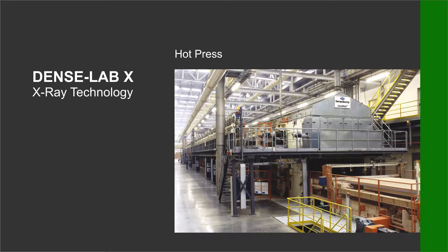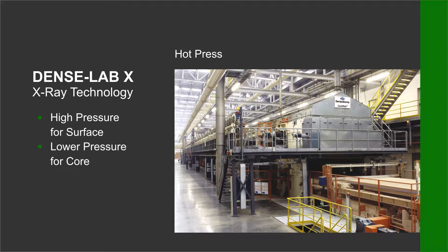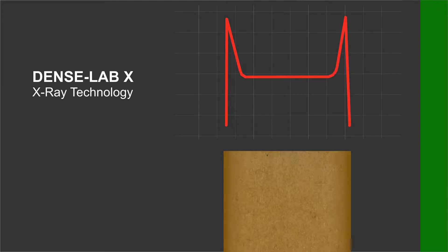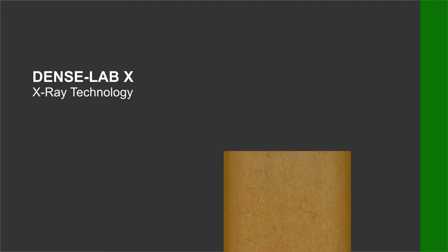At first, the MDF mat will be processed with high pressure. After that, the pressure will be decreased to heat through the core layer over a longer time period. An optimal density profile is targeted. Variations of density in the core are not allowed, as this would result in unacceptable reduction of tensile strength.